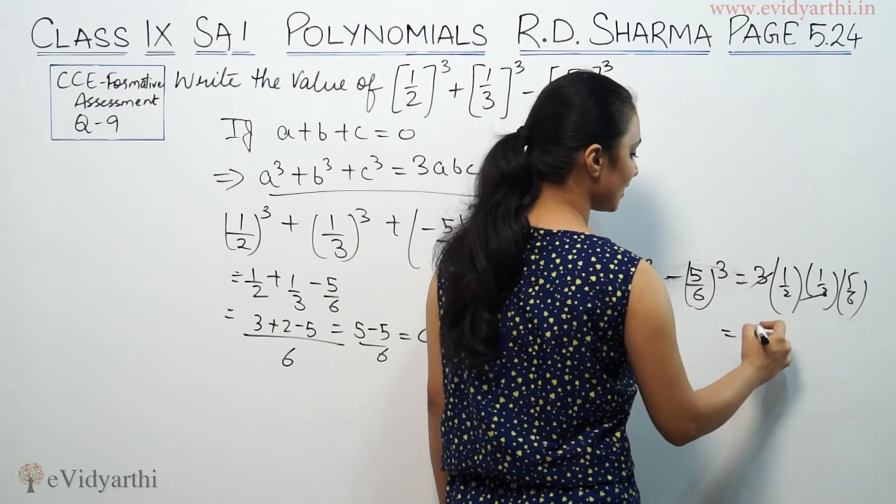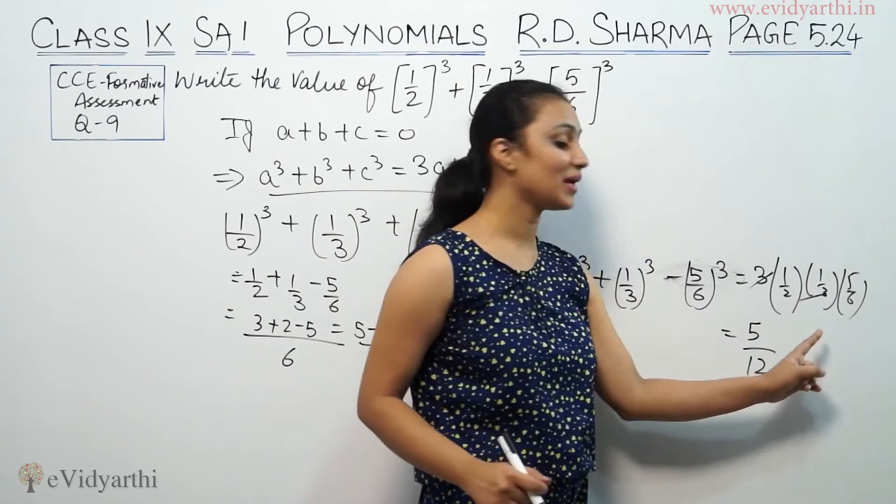So, 3 times 1/2 times 1/3 times -5/6. The 3s cancel. This gives 5/12.